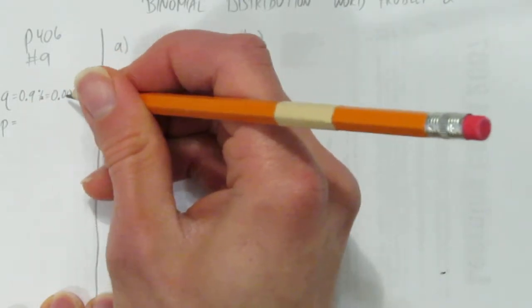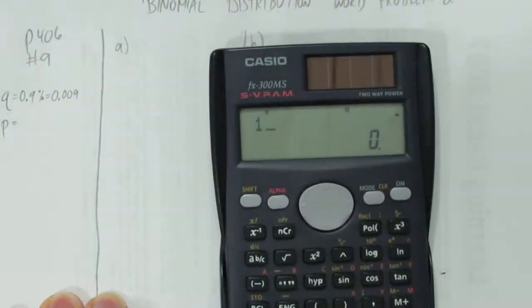So what's the P value? You can just do 1 minus this number. You can do it in your head probably, but if you want to be extra cautious, do it on a calculator. You get 0.991.